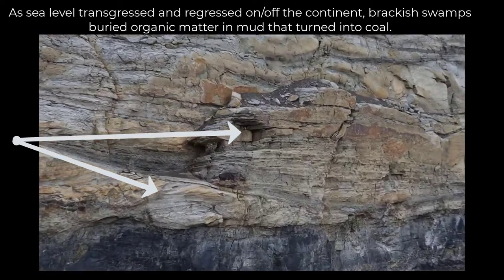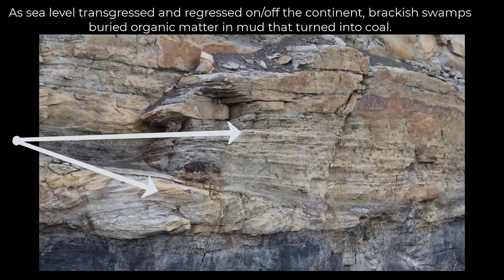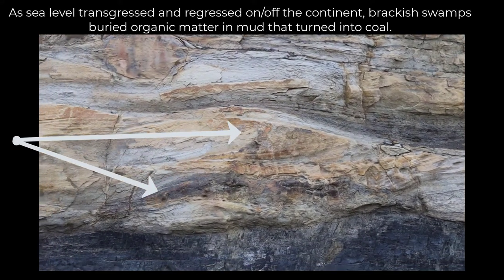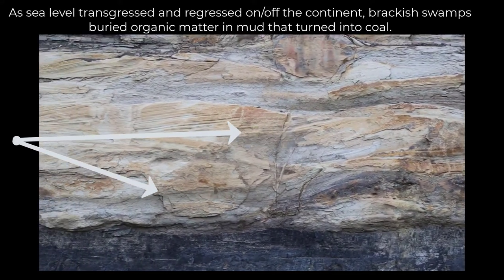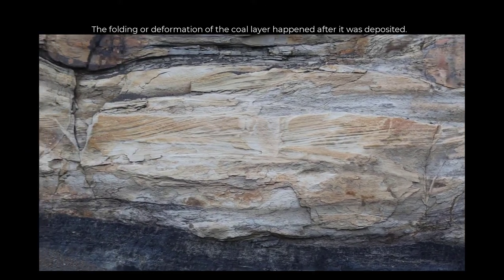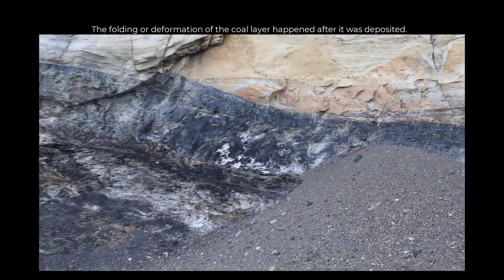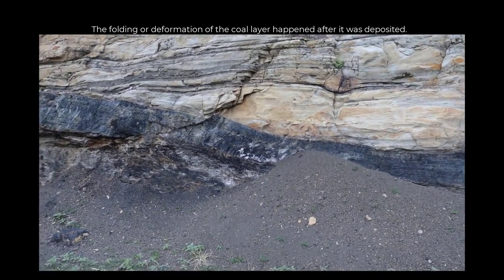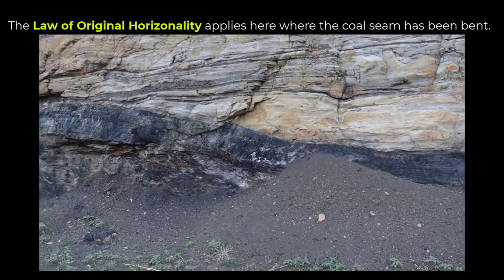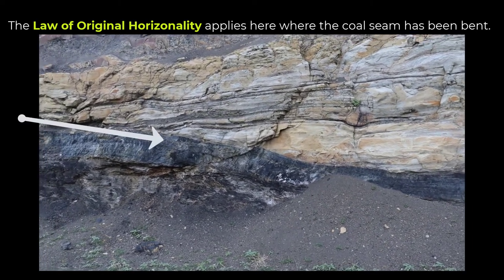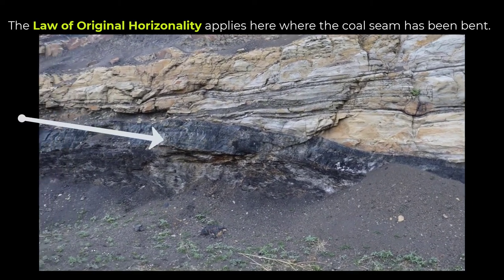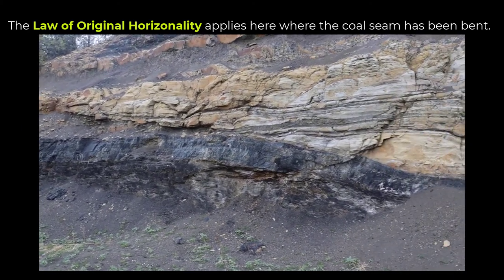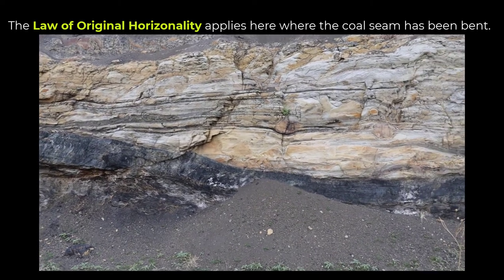Some of the beds don't have a very significant tilt, others do — so these could be inland sand dunes or fluvial deposits. Notice that the coal seam, which is black, is actually folded, and that happened after these rock layers were laid down. The law of original horizontality states that rocks are laid down flat and later folded because of pressure, becoming more pliable.